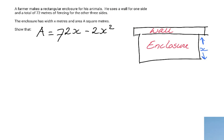He uses a wall for one side and a total of 72 meters of fencing, so 72 meters for the other three sides. So this plus this plus that is 72 meters. That's important to realize. And this is a rectangle, a rectangular enclosure. The enclosure has a width of x meters, and that was already drawn for you in the sketch, and an area of A square meters.